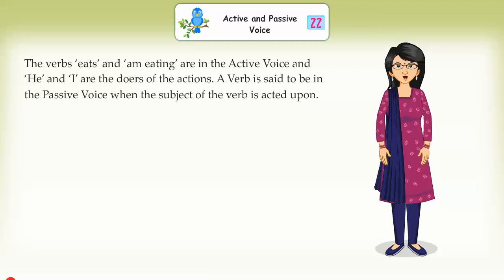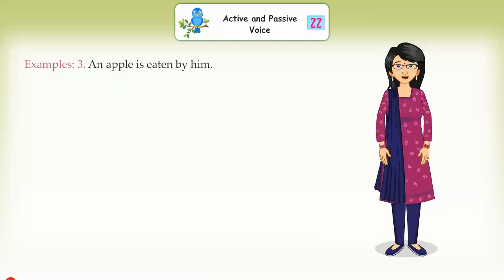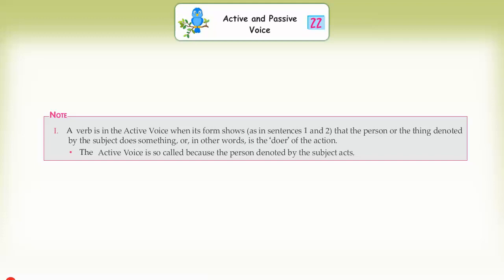A verb is said to be in the passive voice when the subject of the verb is acted upon. Examples: 'An apple is eaten by him,' 'An apple is being eaten by him.' The verbs 'is eaten' and 'is being eaten' are in the passive voice, and the subjects 'an apple' and 'an apple' are acted upon. Note: a verb is in the active voice when its form shows, as in sentences 1 and 2, that the person or thing denoted by the subject does something, or in other words, is the doer of the action.